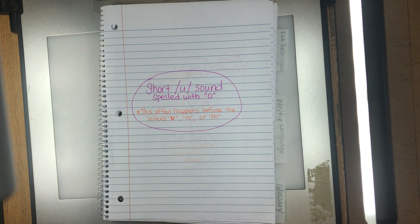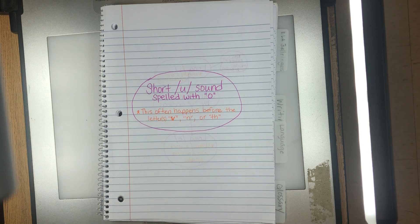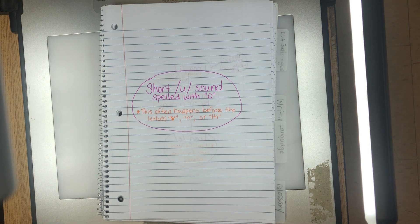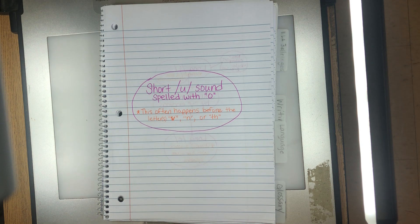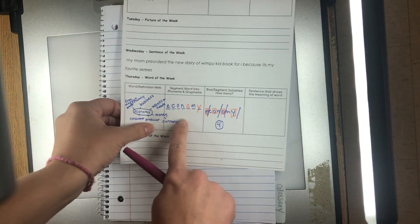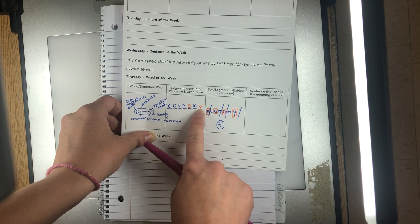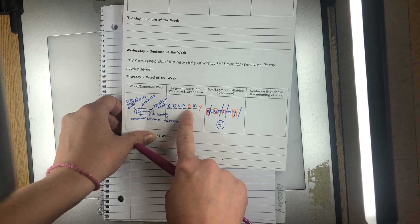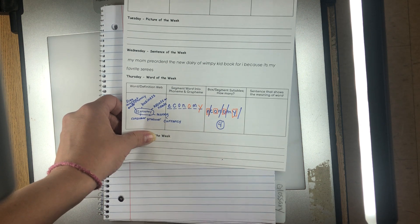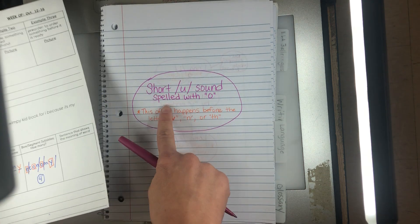All right, so we had a word for our bell ringer. It was economy. Okay, and I told you I was going to talk about those special letters. Remember this from our bell ringer? And I said I had you wait till you filled out the U and the Y because they make sounds that aren't typical with those letters.